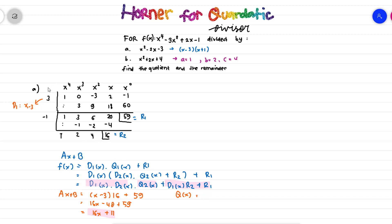For the quotient: since we divided by a degree-2 divisor, the quotient is also degree 2. The coefficients give us x squared plus 2x plus 4. Now let's continue with Part B — the divisor that cannot be factorized.